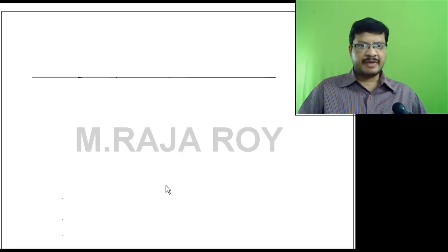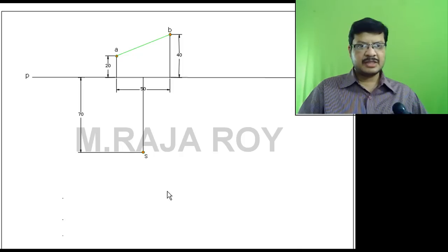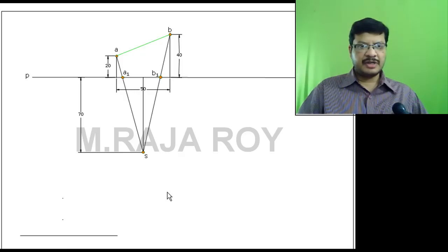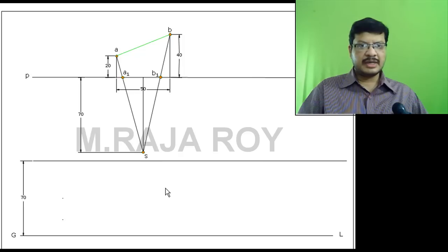Next, I will explain the vanishing point method. For the vanishing point method, only the top view is sufficient — no need to draw the front view or side view. As usual, draw the top view, which is similar to the previous two cases. This gives the top view of the object and the top view of the station point. Obtain A1 and B1 points. After that, draw the ground line, and at the height of the station point, draw the horizon line.